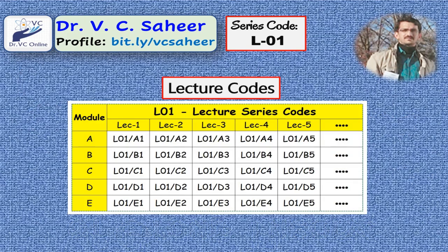If you want to search my first video in the first module, look for L01-A1; the second video in the same module is L01-A2 and so on. To access videos in the second module, search with the code L01-B1, B2, B3, and so on.